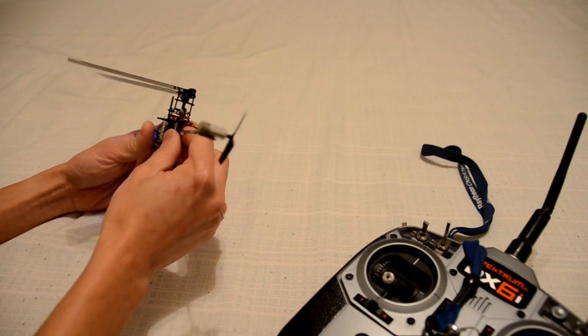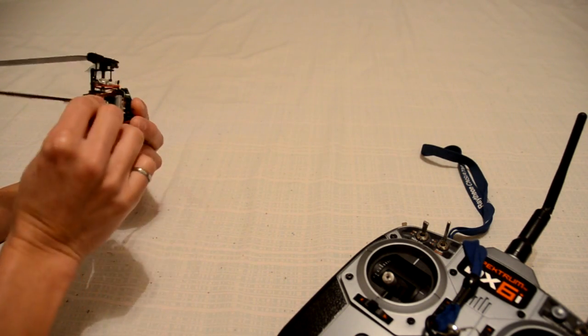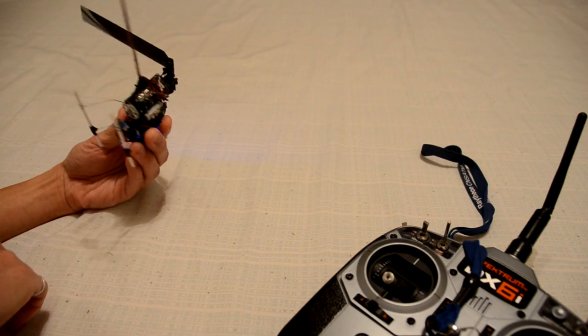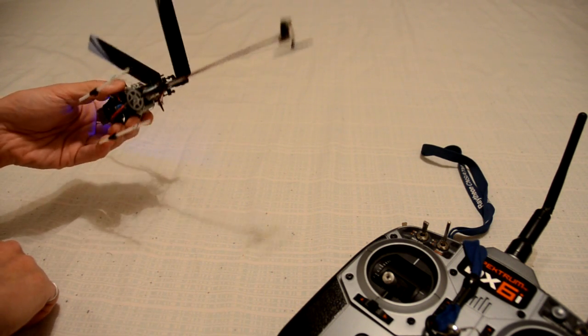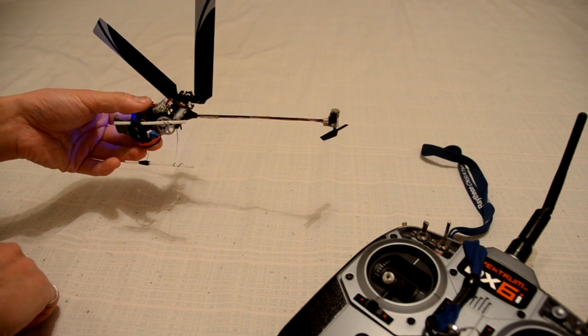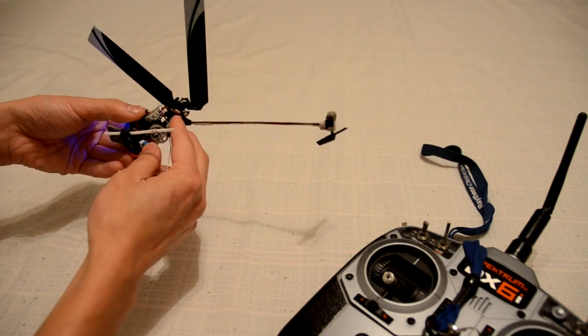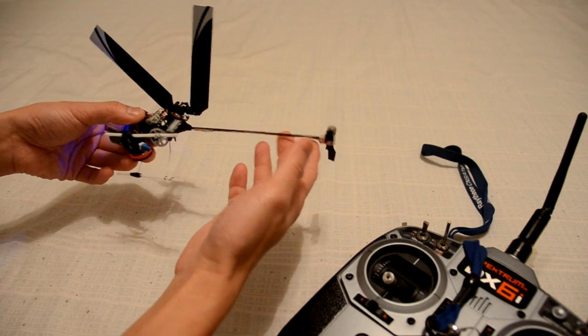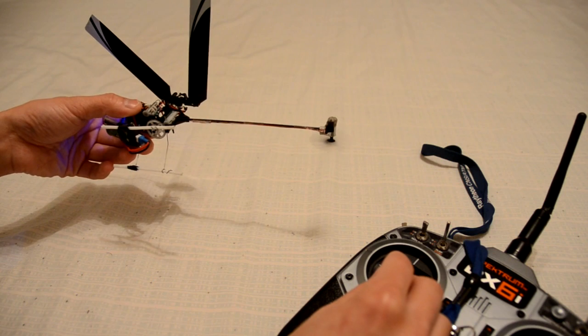hold your three-in-one board like this with two fingers and lay your helicopter sideways. Use the weight of the tail boom to counteract the force from the tail rotor, and now you can throttle up.